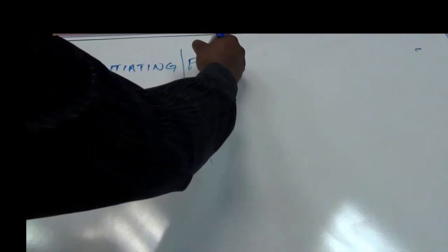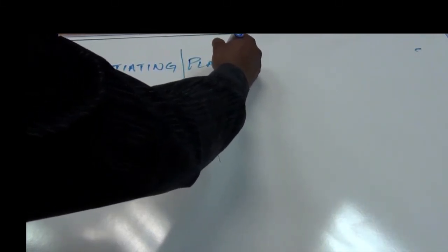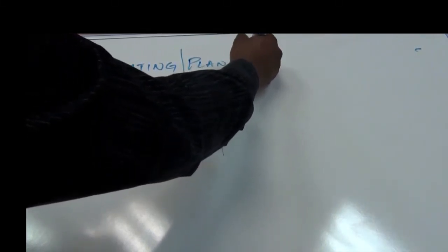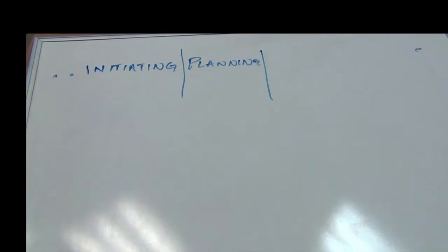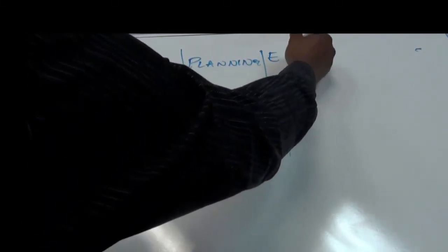The next group we have is planning. The planning process group is all about coming out with a plan of action that will be carried out to get the project work done. The next group of processes is executing.